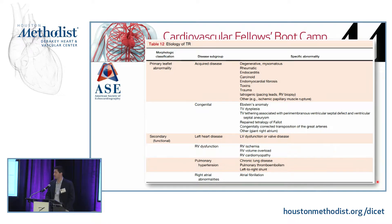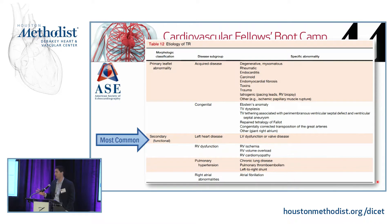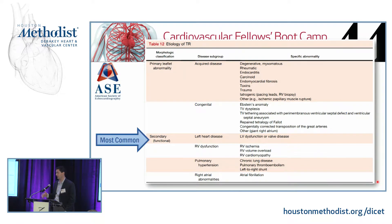This table represents the most common etiologies for tricuspid regurgitation, pulled from the ASC guidelines on valve regurgitation. It's broken down into primary leaflet etiologies versus secondary or functional causes. Functional TR is far and away the most common variety — something like 80% of the TR we see. The disease processes causing it include left heart disease, valve disease, RV dysfunction, and pulmonary hypertension.